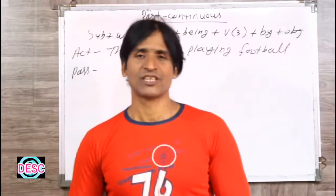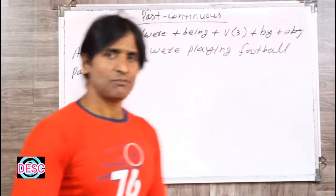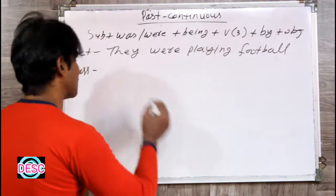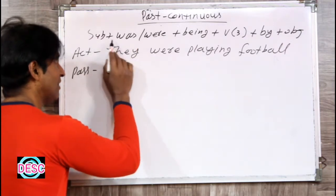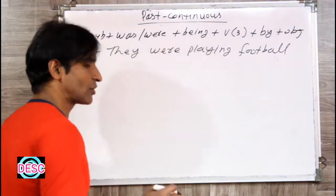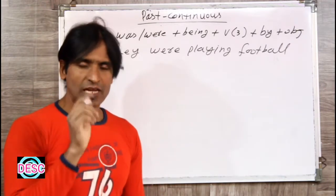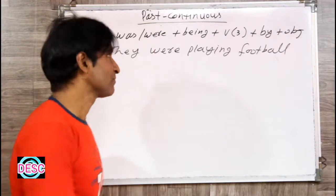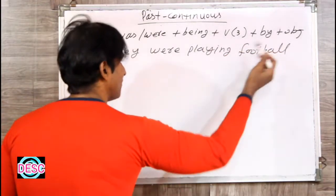Ok friends, let's start. Aaj ki padhai shuru karte hain. Past continuous tense ke liye humne ek formula likha hai passive sentence banane ka — Subject + was/were + being. Jitne bhi continuous tenses hain, unme helping verb ke baad 'being' zaroor lagta hai passive sentence banate waqt. Uske baad V3 lagta hai, phir 'by', phir object.